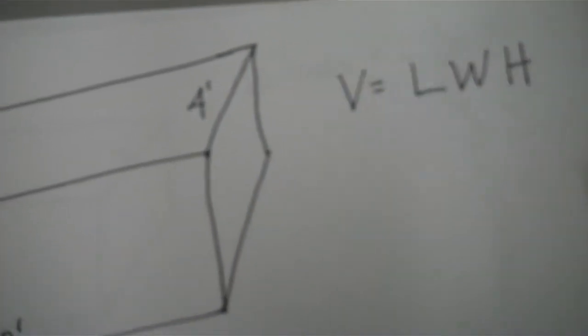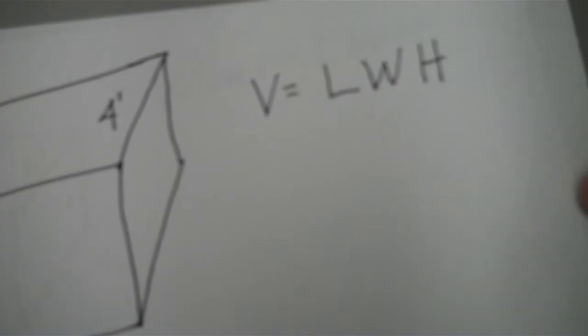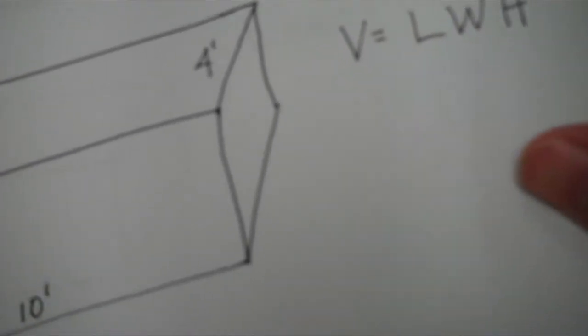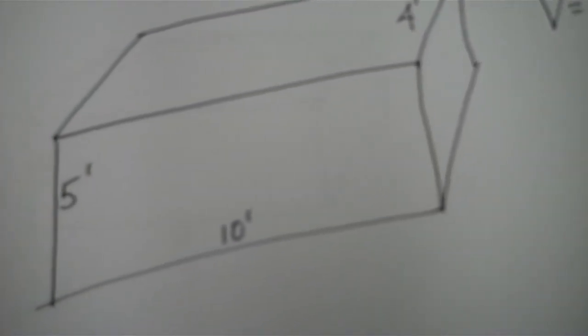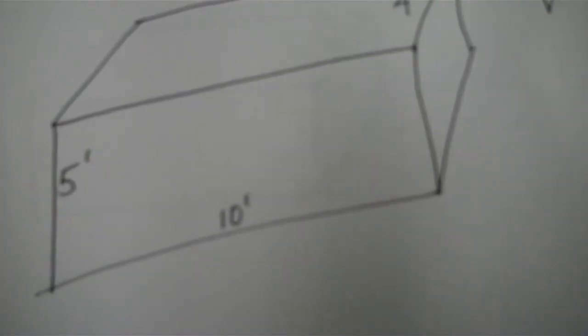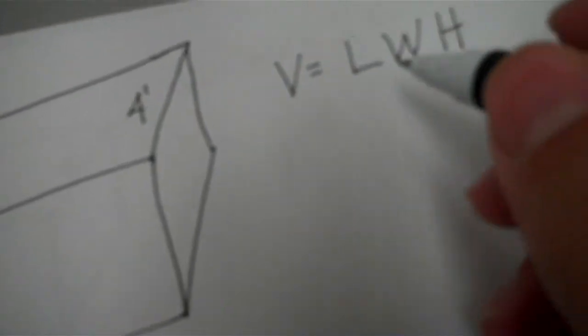And of course the volume of a rectangle is length times width times height. The first thing that I would want to do is find my length of this object which is ten foot, so I'm gonna write this down over here. Volume is equal to my length, which is ten foot. Make sure you put your unit on there.